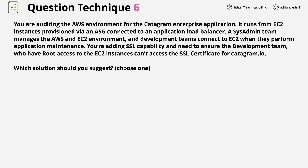The question is that you're auditing the AWS environment for the Catagram Enterprise application. It runs from EC2 instances provisioned via an auto-scaling group connected to an application load balancer. A sysadmin team manages the AWS and EC2 environment, and development teams connect to EC2 when they perform application maintenance. You're adding SSL capability and need to ensure the development team who have root access to the EC2 instances can't access the SSL certificate for Catagram.io. Which solution should you suggest?